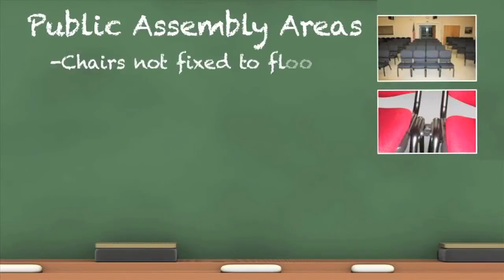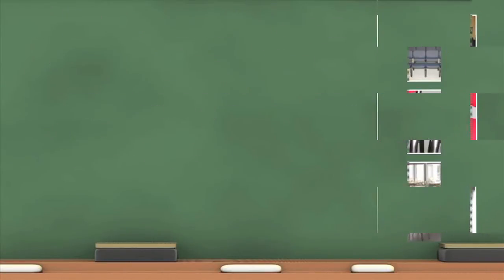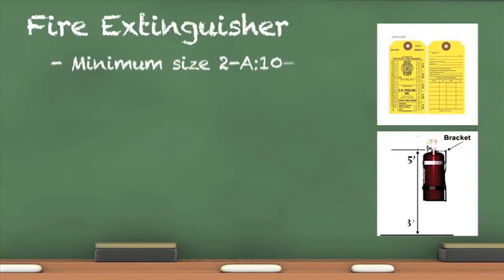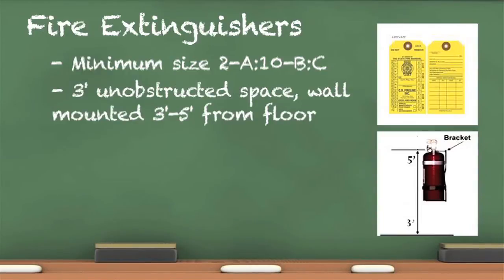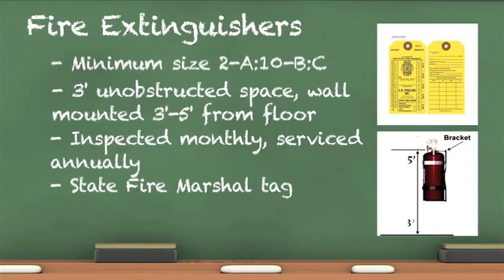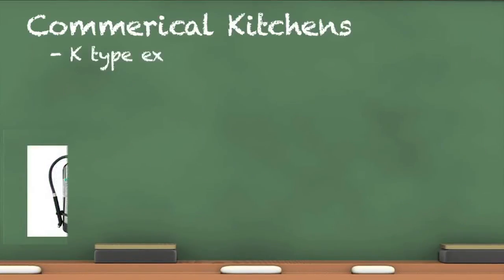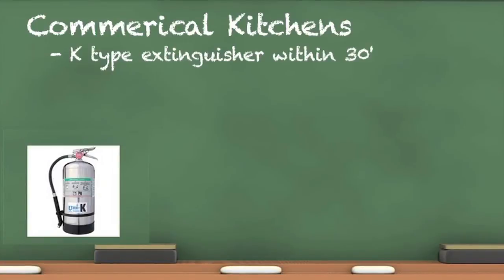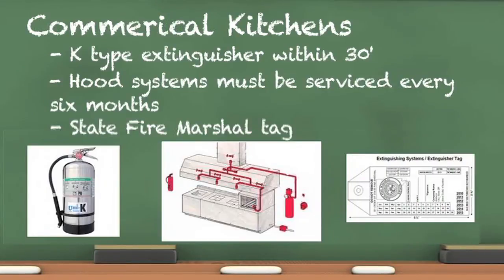Chairs set up in a theater-style arrangement and not fixed to the floor shall be bonded in groups of three or more when the occupant load is 200 or more, unless tables are provided. The minimum size for fire extinguishers is 2A10BC, and a minimum of 3 feet of unobstructed space is required for access. All fire extinguishers must be visually inspected monthly and serviced annually; records of this inspection and service shall be kept on site. In all A occupancies with commercial kitchens, K-class extinguishers are required and must be serviced annually. Hood extinguishing systems are required to be serviced every six months. State fire marshal tags are required for all extinguishing systems and extinguishers.